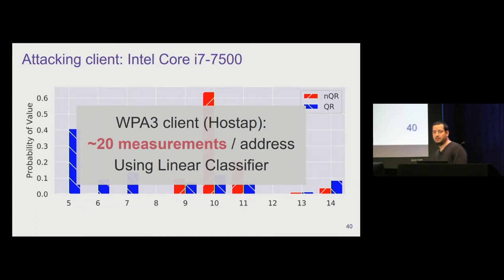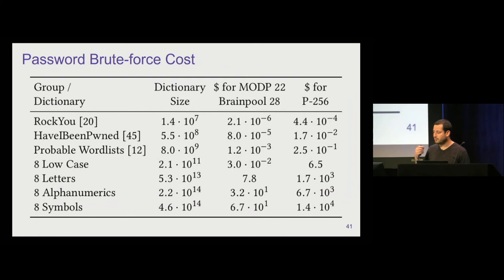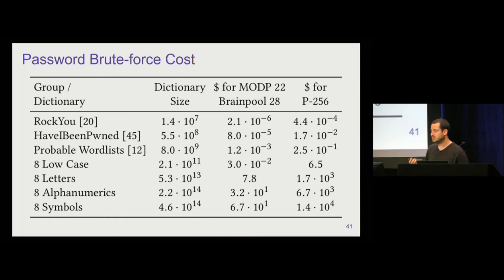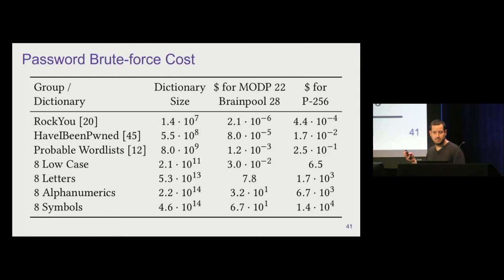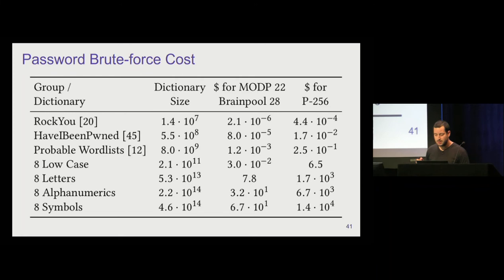To test whether this side-channel information translates to actual password recovery, we performed a full probabilistic analysis of measurements and computational steps required to recover a password from dictionaries of various sizes. We implemented the attack using GPU code and calculated AWS costs: for the HaveIBeenPwned password database (all known password dumps), recovery costs about two cents in the worst case for NIST curves. Even for an eight-character password space, the cost remains cheap for an attacker — and if it's your day job, you'd buy your own GPUs for even less.